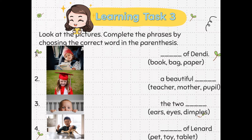Number 7: Is that a pet, toy, or tablet of Leonard? Let's check the answers: book of Dendee, a beautiful pupil, the two eyes, toy of Leonard.